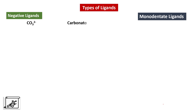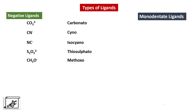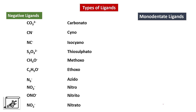More negative ligand examples: carbonato; if a cyano group is attached to carbon it is called isocyano, and if attached to nitrogen it is called cyano. Then we have thiosulfato, methoxo, ethoxo, azido, nitro, nitrito, thiocyanato, isothiocyanato, and acetato.